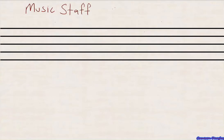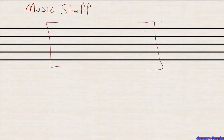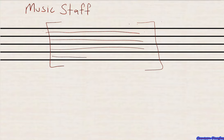Our topic today is the music staff, and in this lesson we're going to talk about the two parts that make up the music staff. First of all, what is a music staff? The music staff is what we use to read and write our musical notes. I have an example of it right here. If you look in your manuscript books or your recorder books, you're going to see these lines going across the page, and that is the first thing we observe about the music staff.